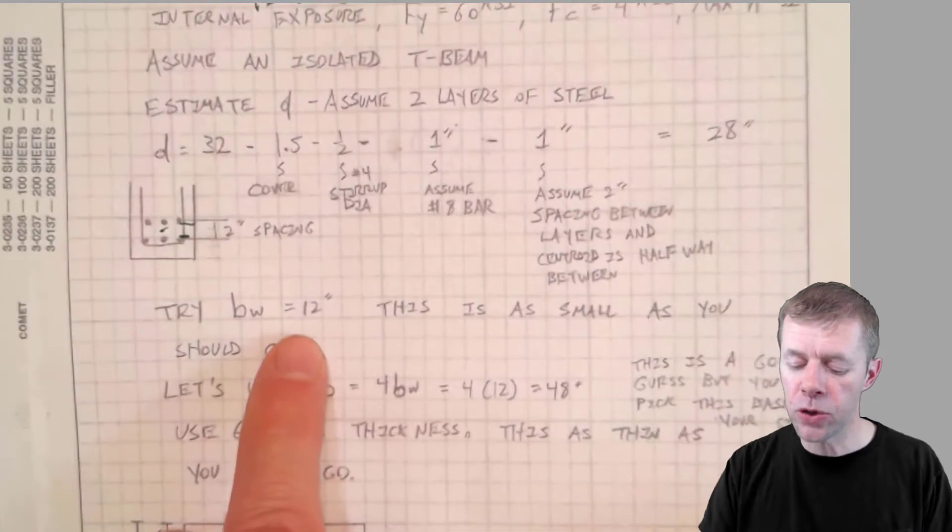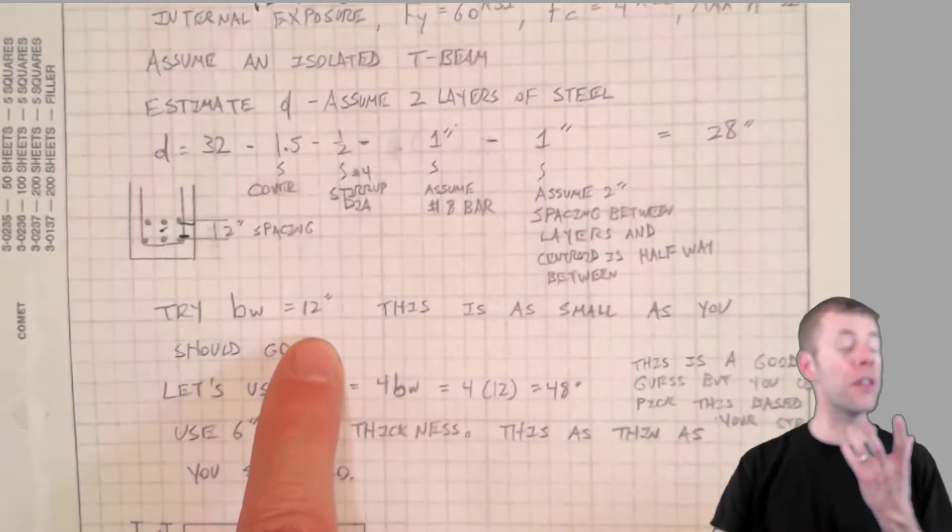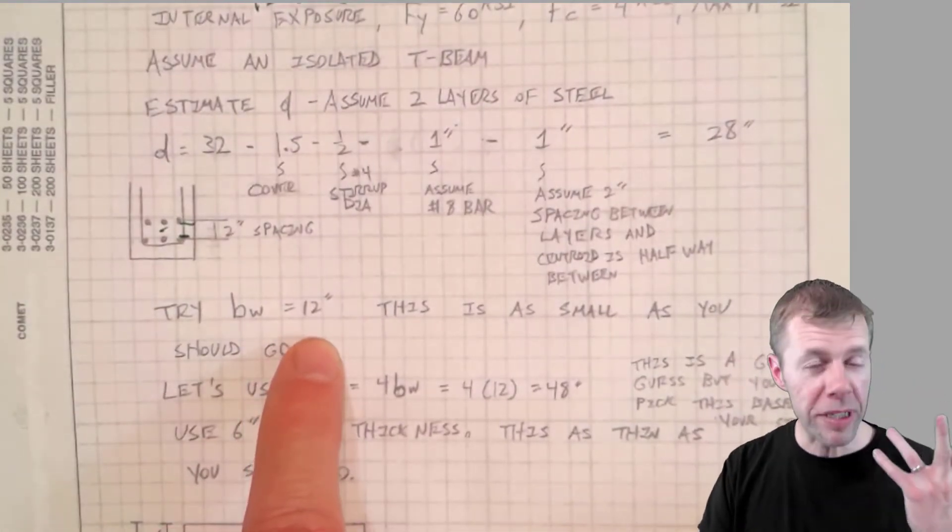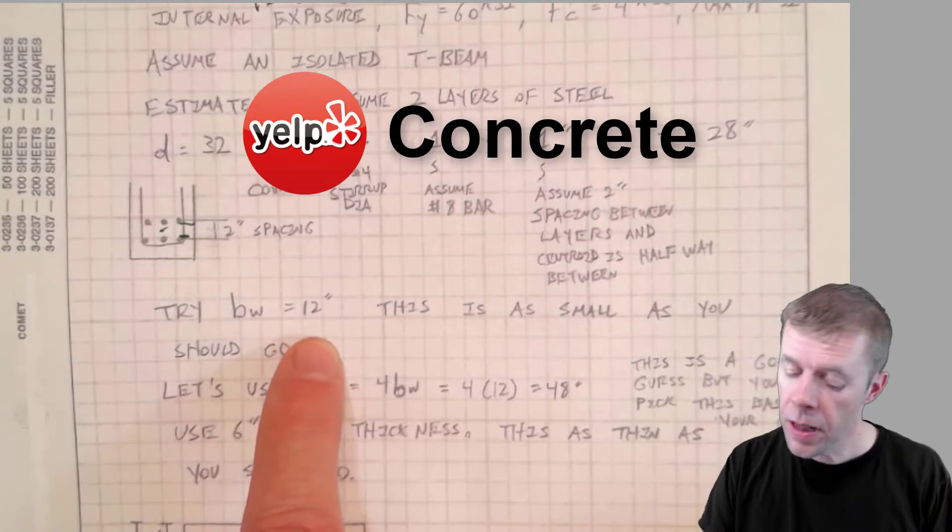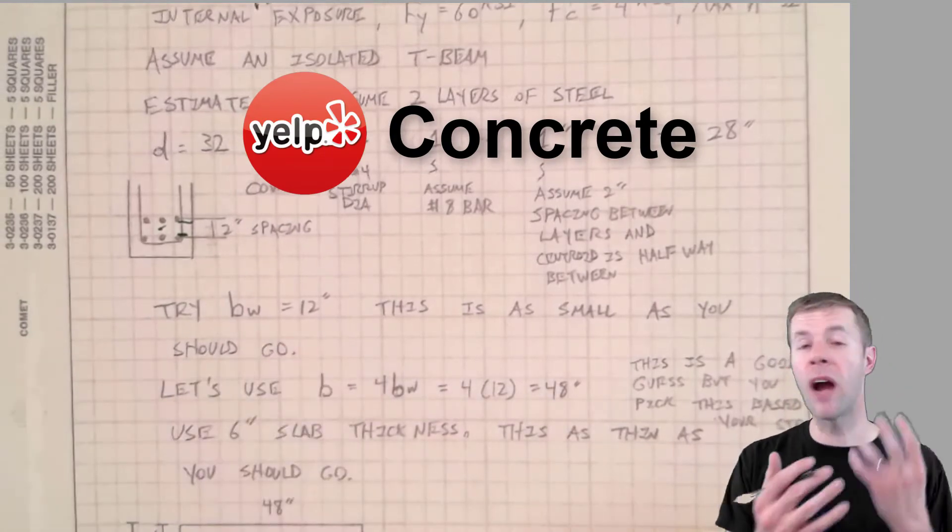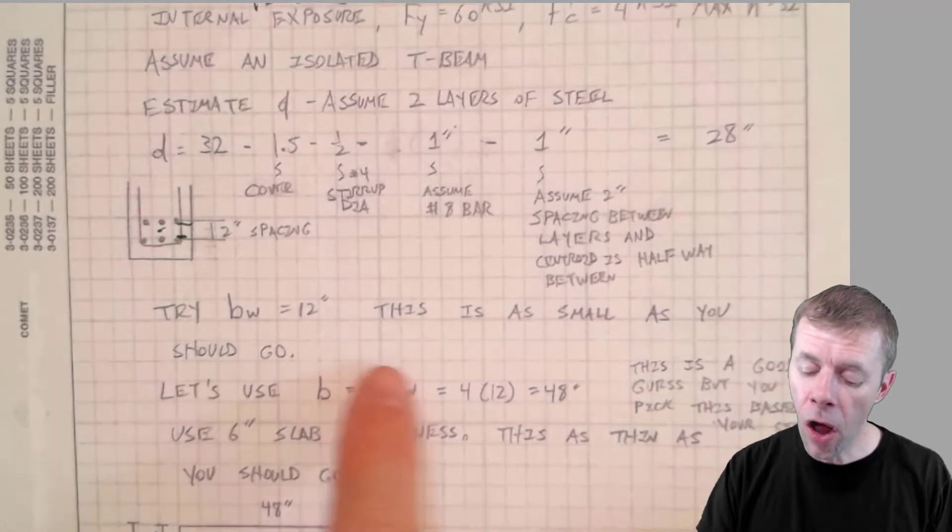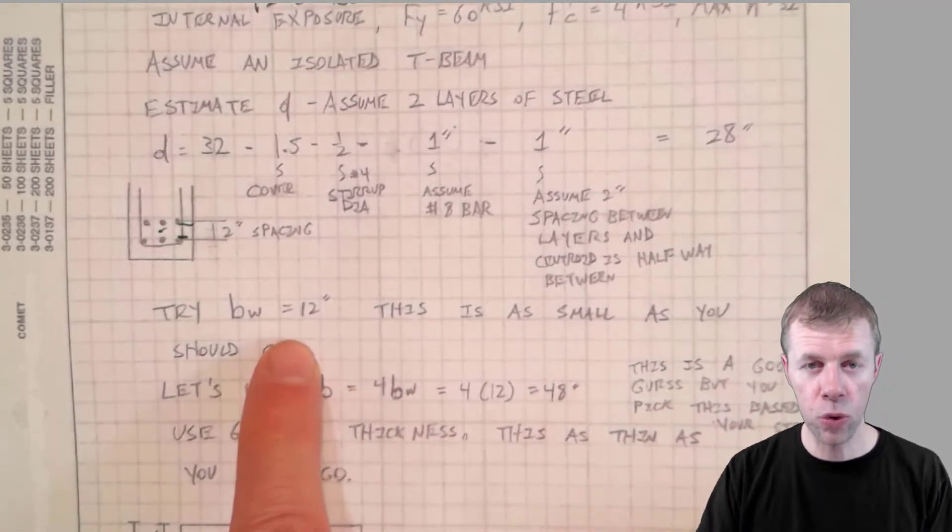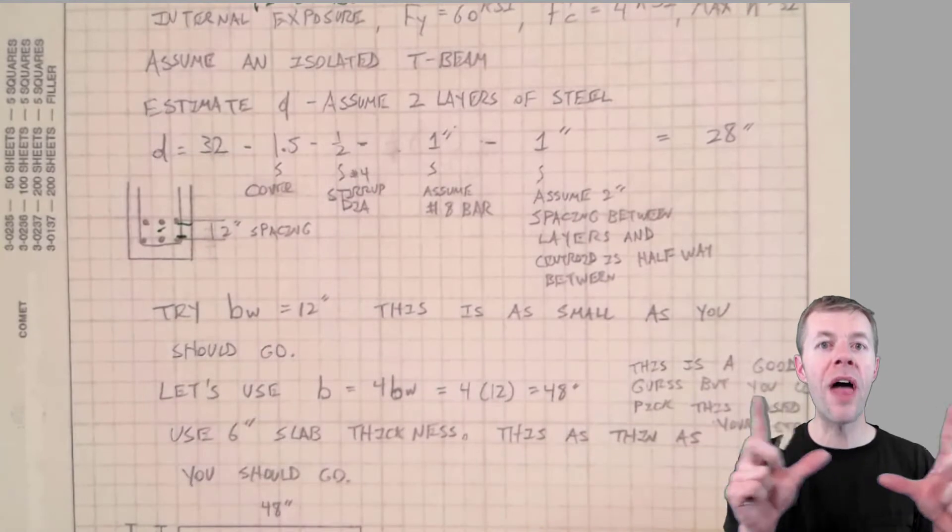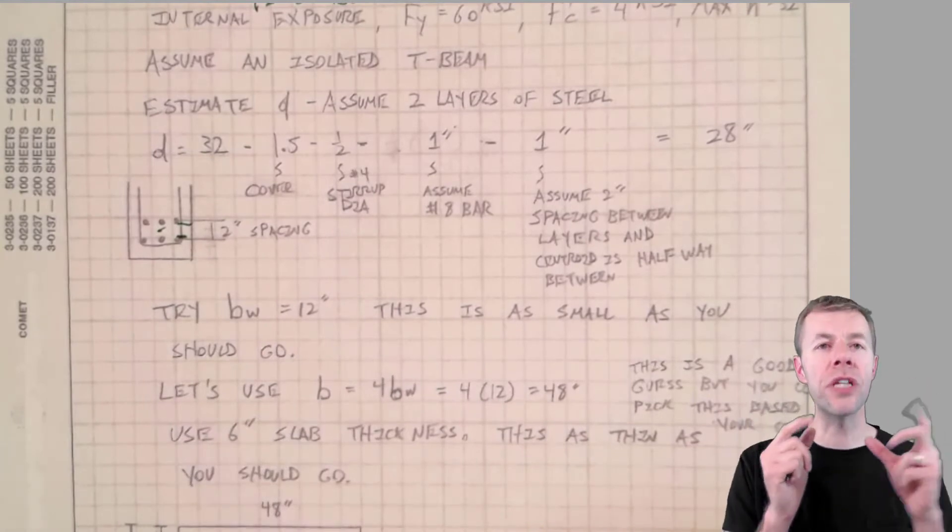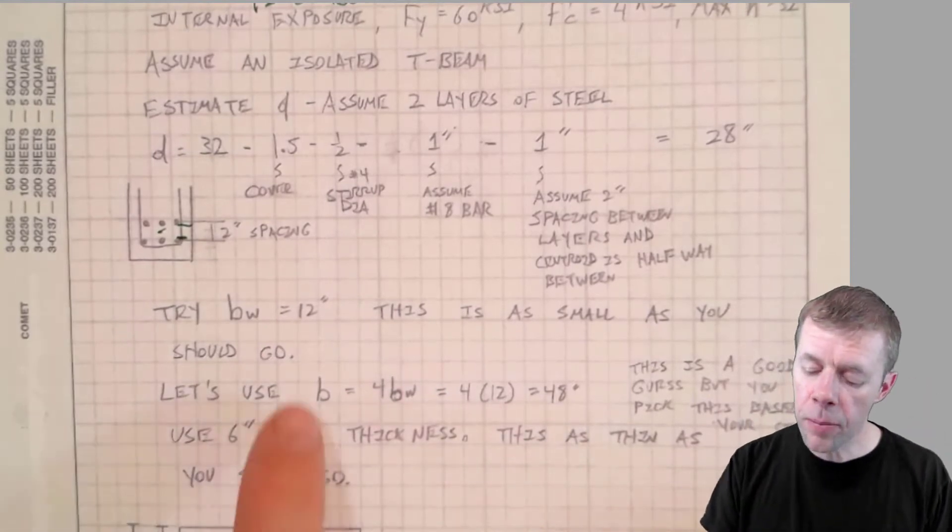Now I'm gonna try my B sub W as 12 inches. This is another Yelp tip. Yay Yelp! This is the Yelp for concrete where I've done a lot of this and I'm gonna help you get through the maze. This is about as small as you should go, 12 inches. If you get much smaller than that, it's just too hard to fit all your steel in.